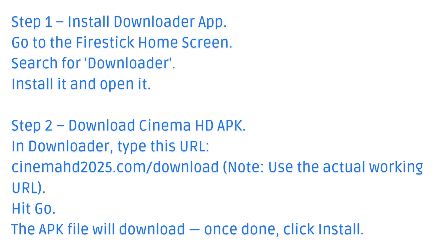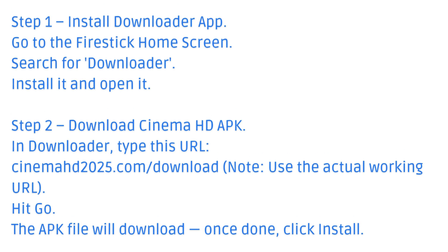Step 2: Download Cinema HD APK. In Downloader, type this URL and hit Go. The APK file will download. Once done, click Install.